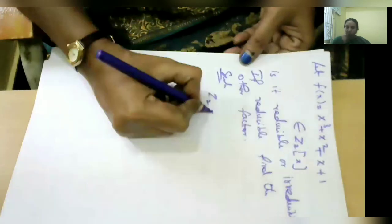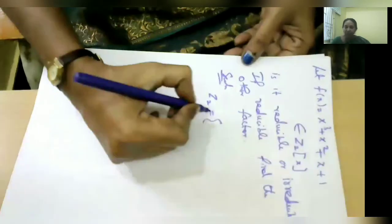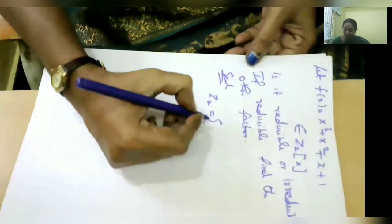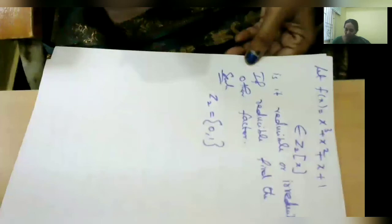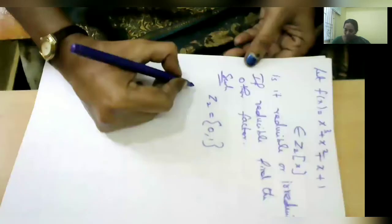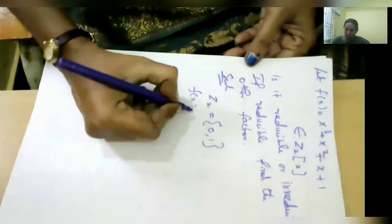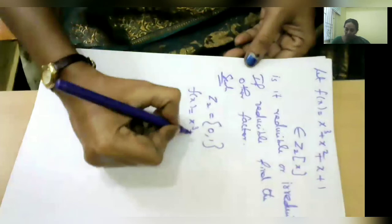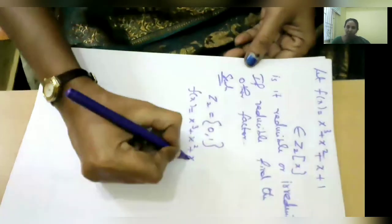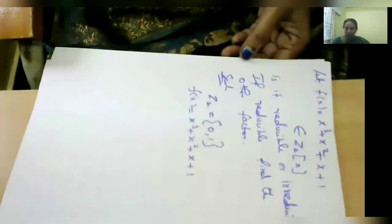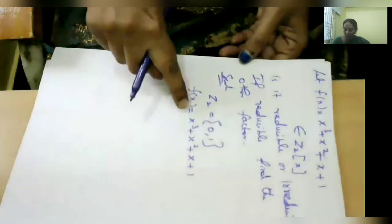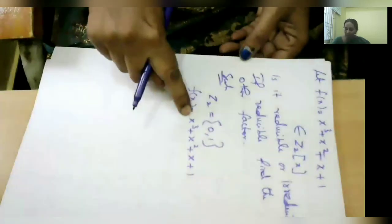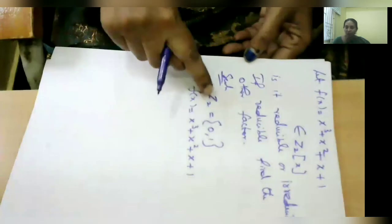What is Z₂? Z₂ is a set containing two elements starting from 0: Z₂ = {0, 1}. Our given polynomial is f(x) = x³ + x² + x + 1. In this polynomial, check each coefficient — whether it belongs to Z₂ or not. If it does not belong to Z₂, take the element congruent mod 2.